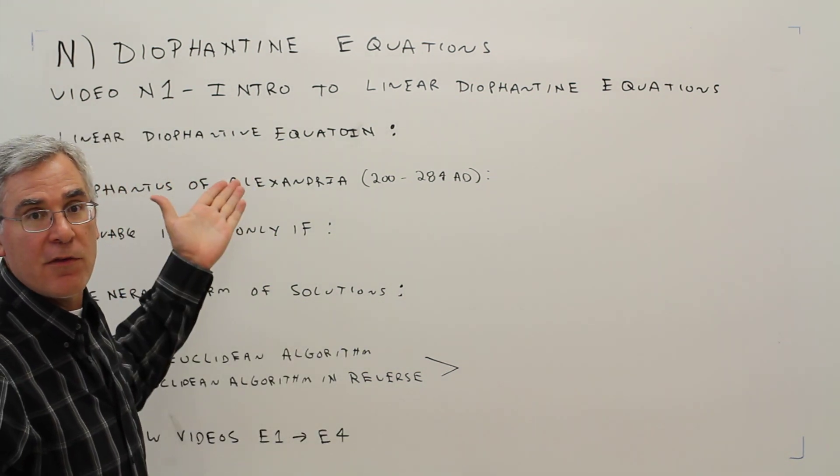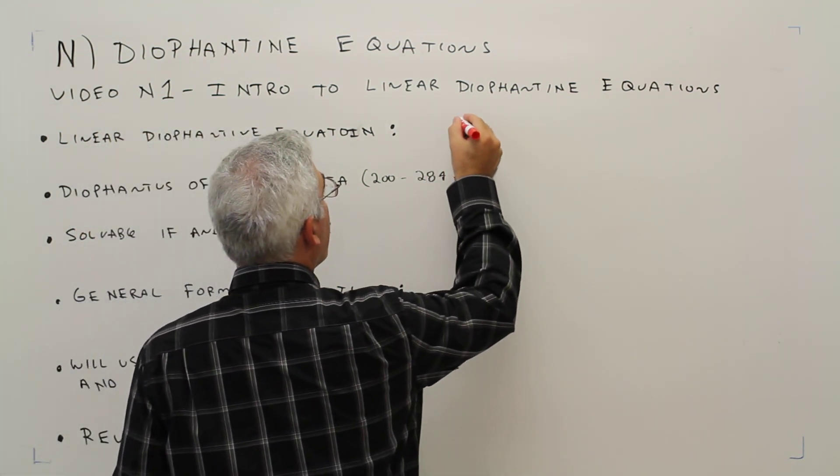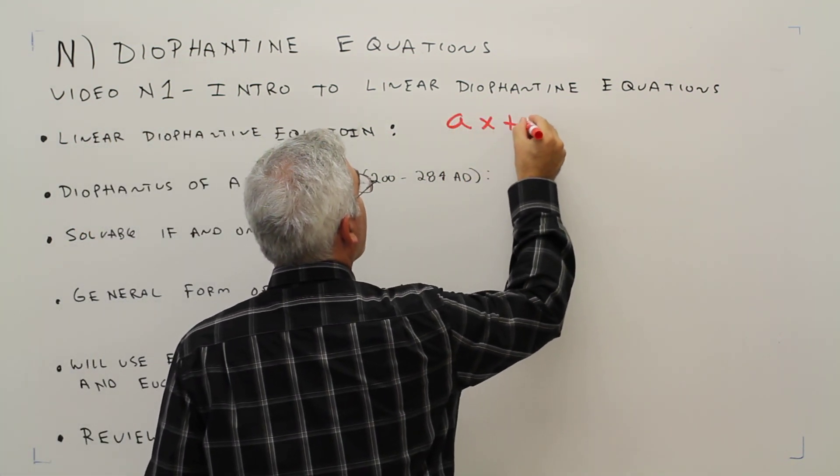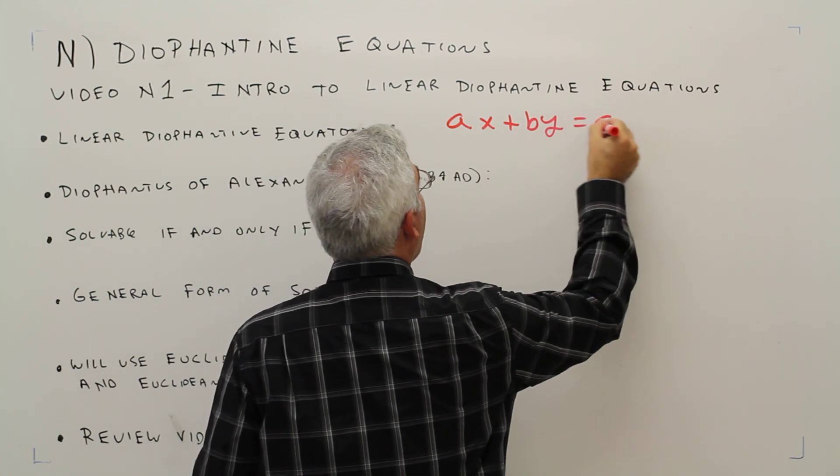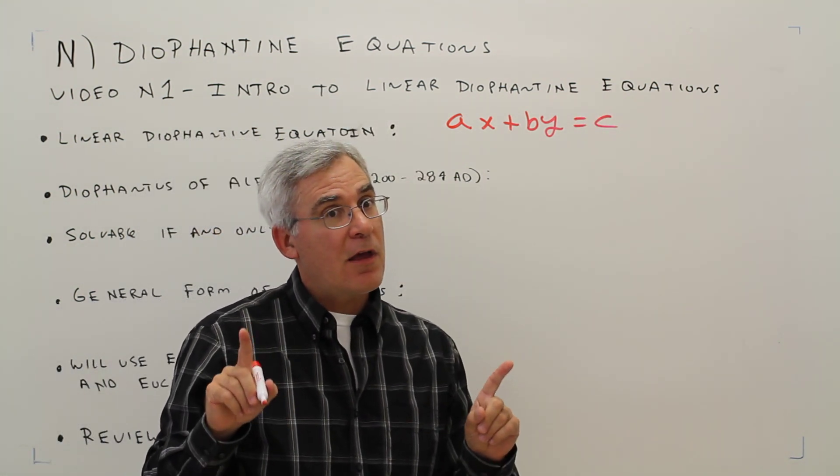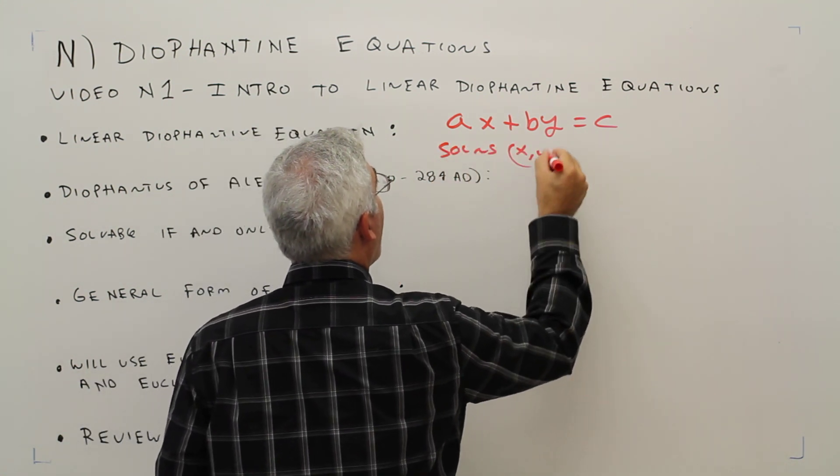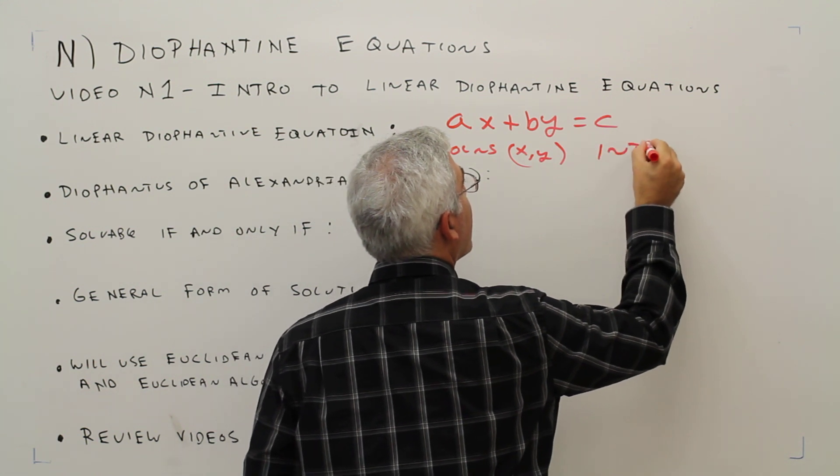First of all, what is a linear Diophantine equation? It's an equation of this form, AX plus BY equals C, where the solutions X comma Y are integers.